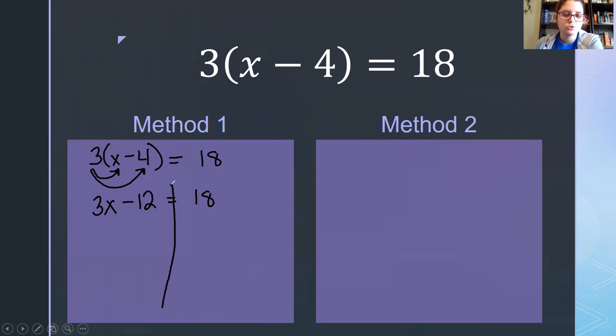3 times negative 4 is negative 12 equals 18. Now we're ready to drop in our line and follow our steps of solving a two-step problem. We undo the minus 12 first, so we're going to add 12. A negative 12 and a positive 12 cancel, leaving us with 3x. 18 plus 12 is 30. We're going to undo multiplication with division. So x equals 10.